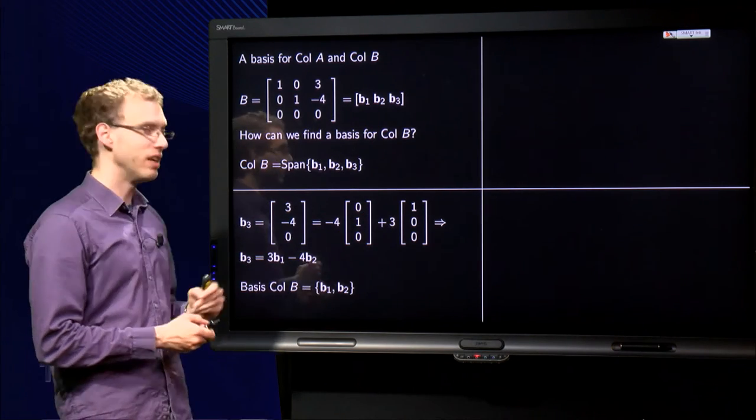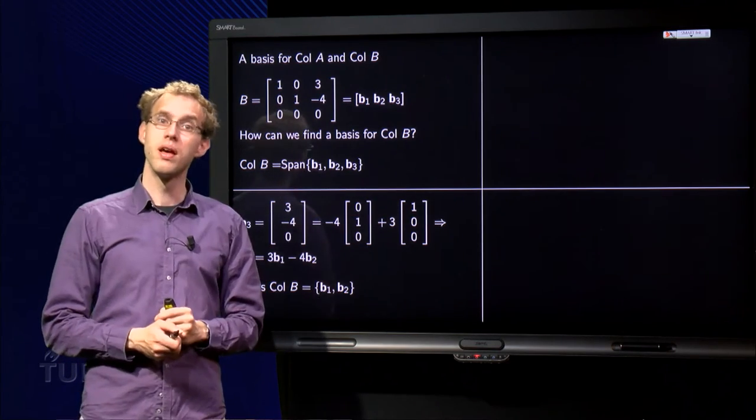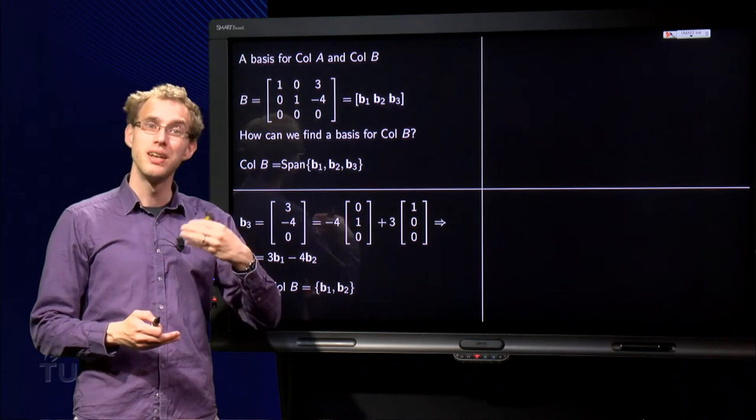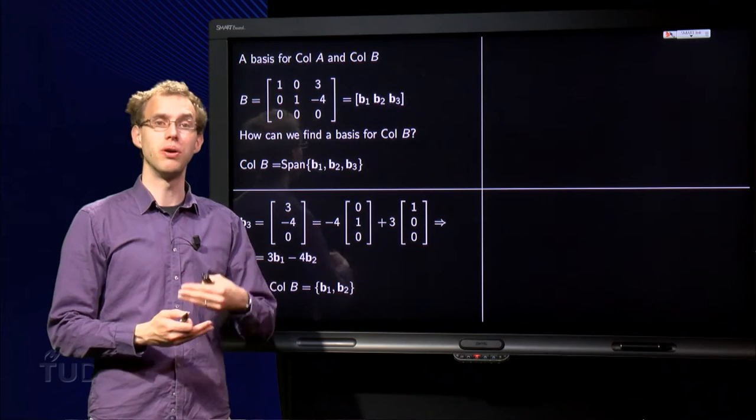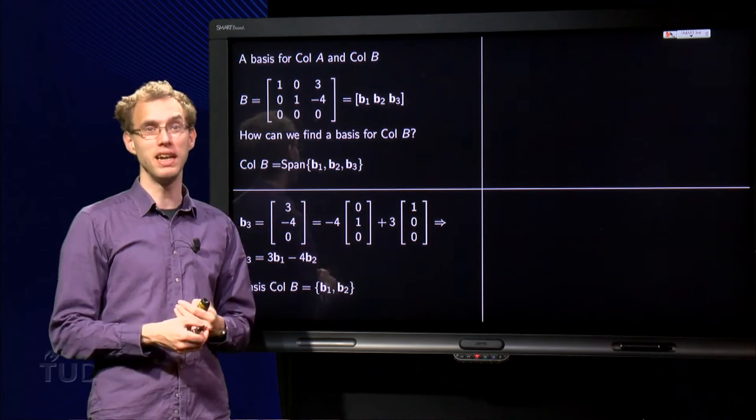So that means that b₃ equals 3 times b₁ minus 4 times b₂. So b₃ is a linear combination of b₁ and b₂. So b₃ depends on b₁ and b₂, so it cannot be in a basis.